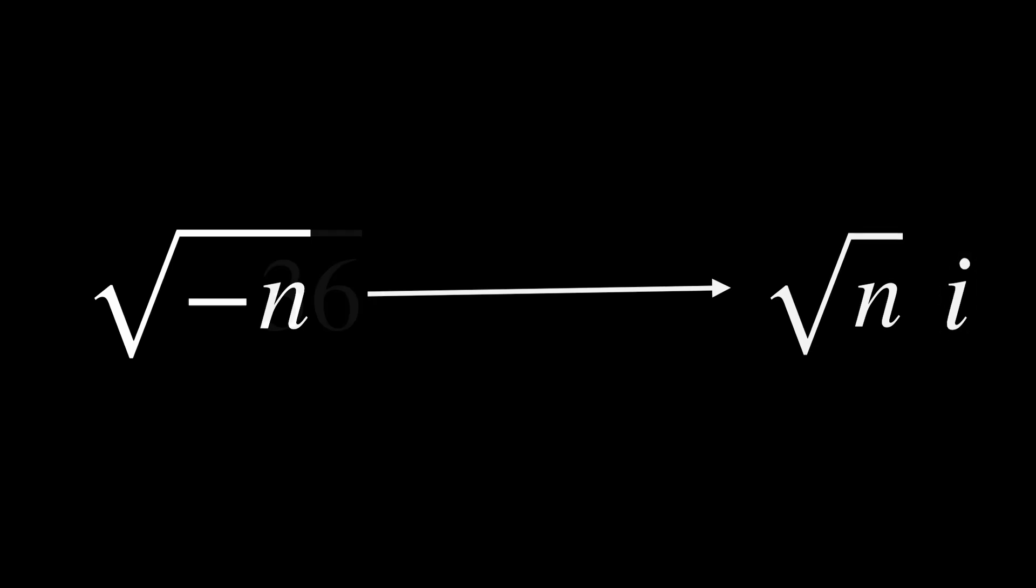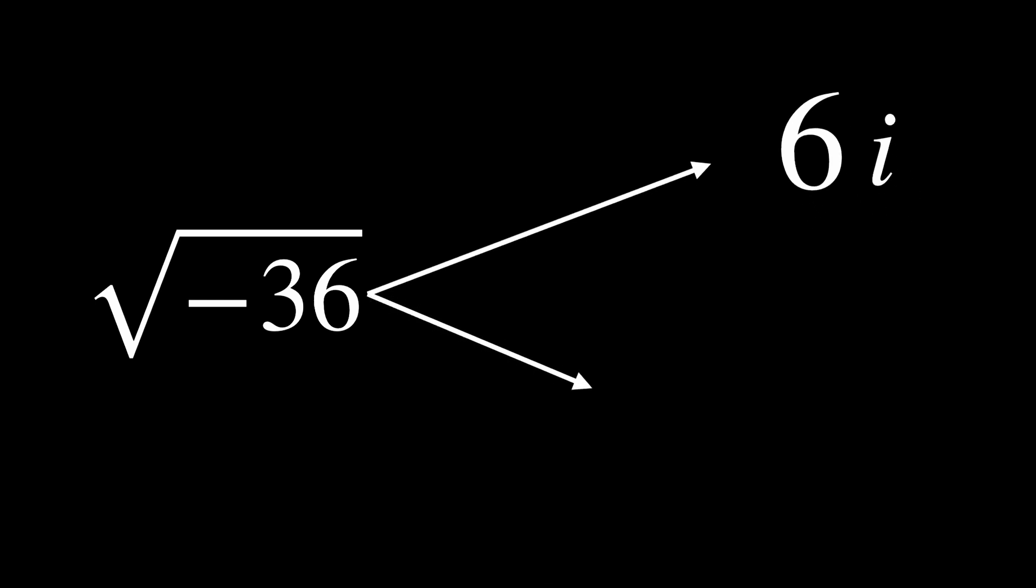An example might be helpful. The square root of negative 36 would be the square root of 36 times i, which would be 6i, but another square root would be negative 6i.